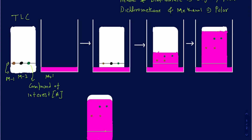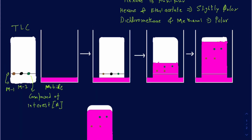You put this TLC plate into a beaker that contains the mobile phase. One thing you must make sure is that the baseline — where your starting point is for the compounds and mixtures — is a little bit above the surface of the solvent. If the mixture is inside the solvent, it may dissolve into it, which would defeat the purpose of the TLC. That's one reason you always make the baseline a little bit above the bottom of the TLC plate.